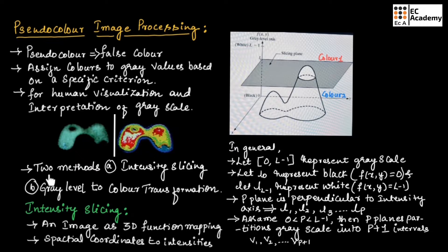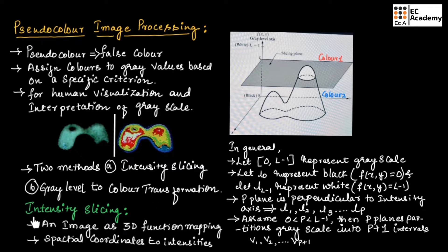There are two methods in pseudocolor image processing: the first one is intensity slicing and the second one is gray level to color transformation. In this lecture, we will understand about intensity slicing.